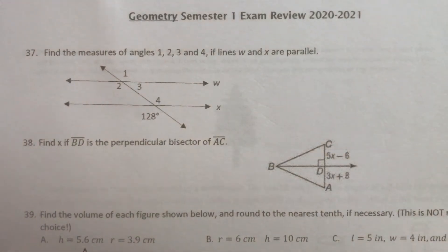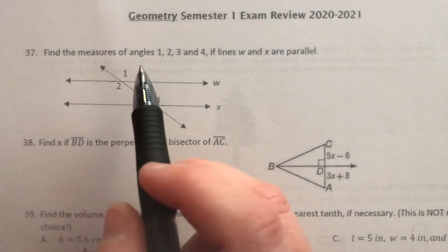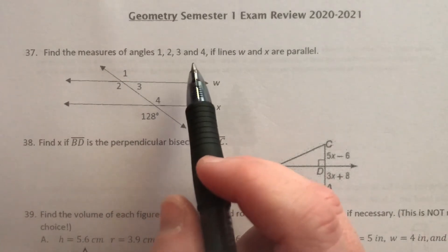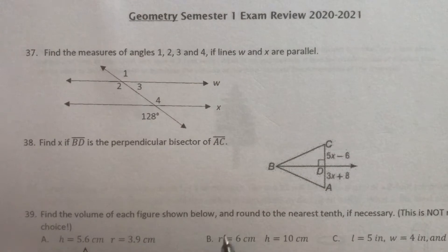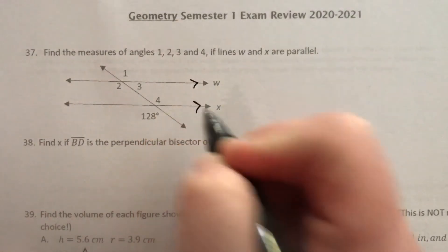All right, this is the review page eight, starting with number 37. Find the measures of angles 1, 2, 3, and 4 if lines W and X are parallel.